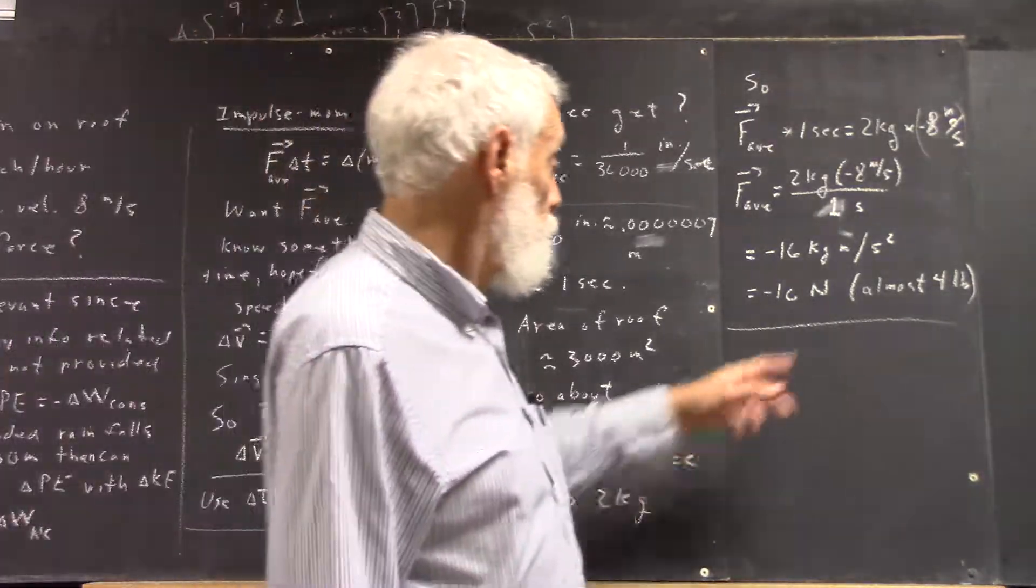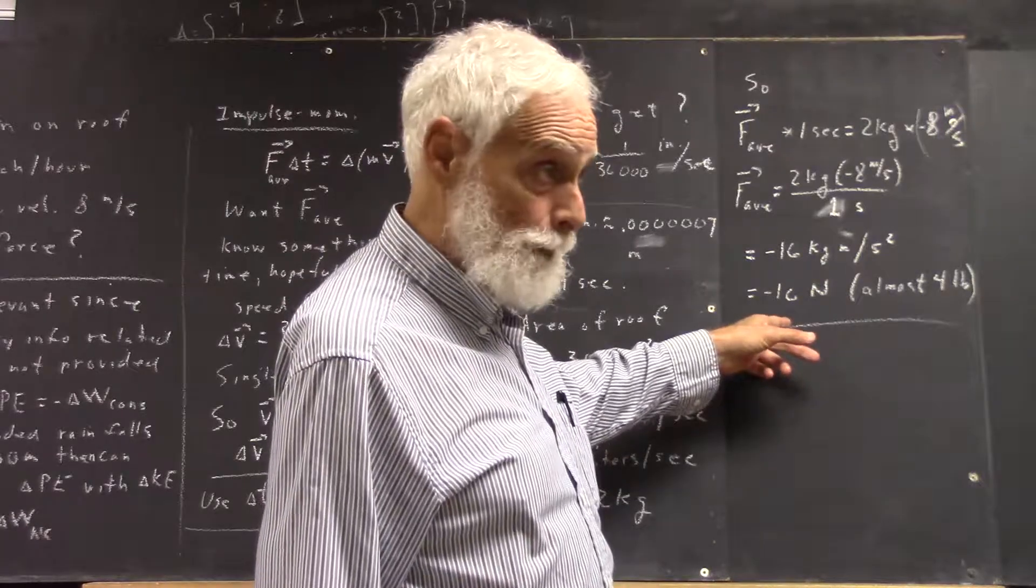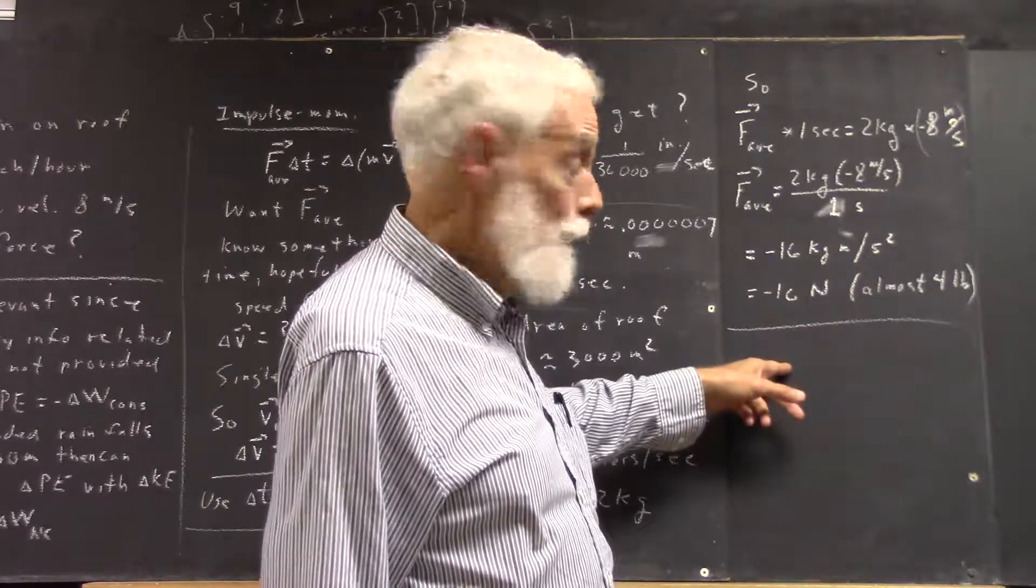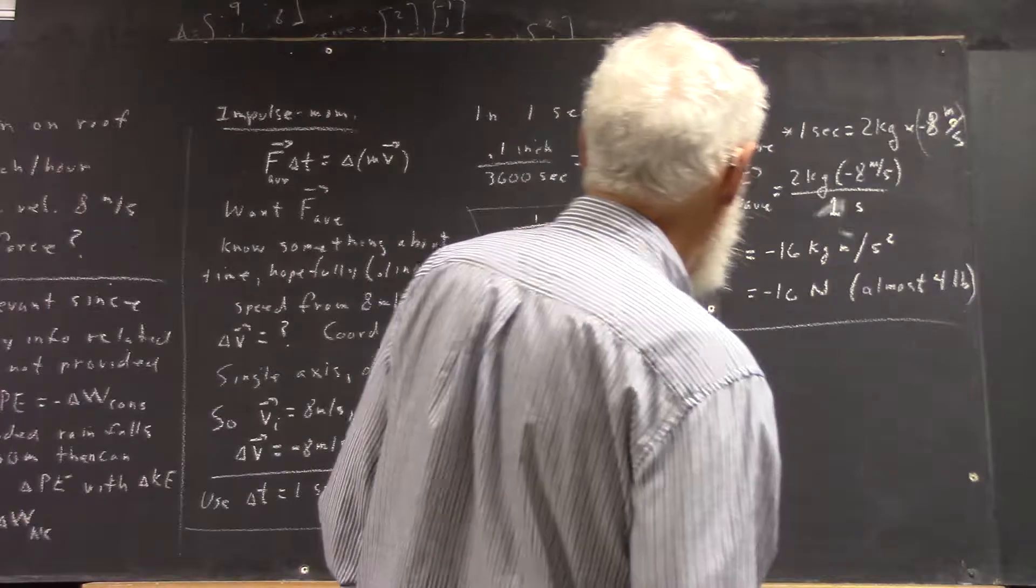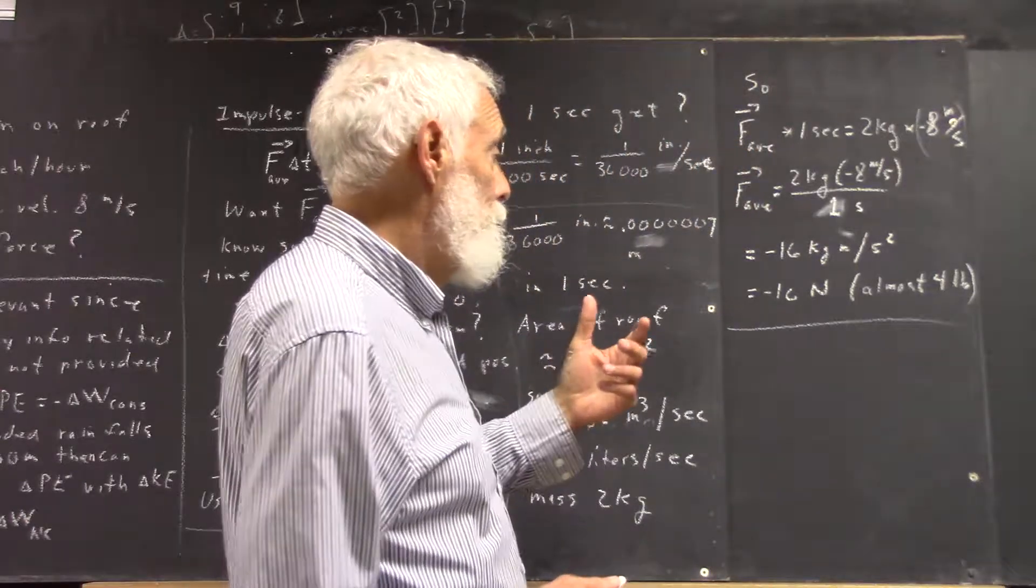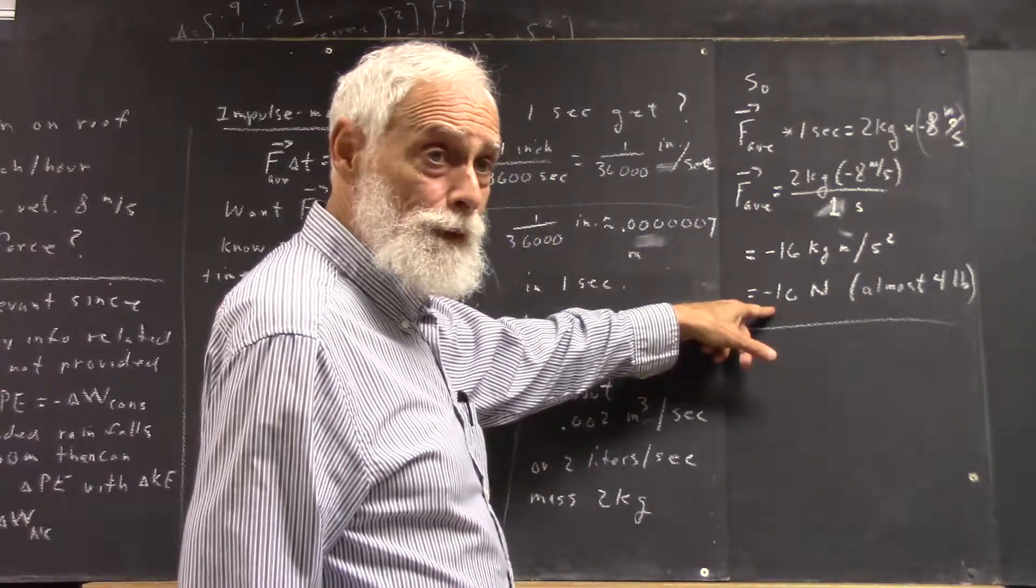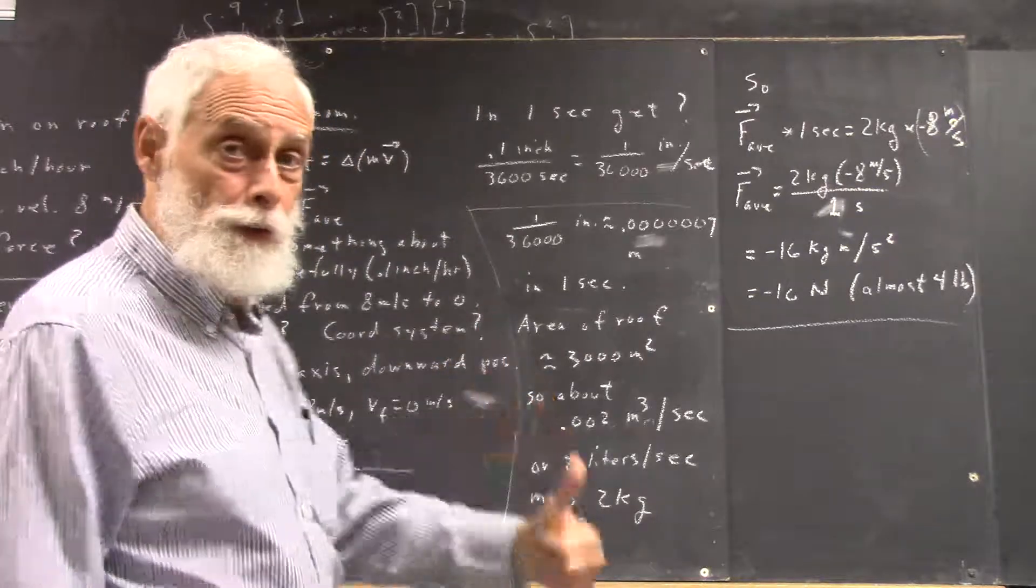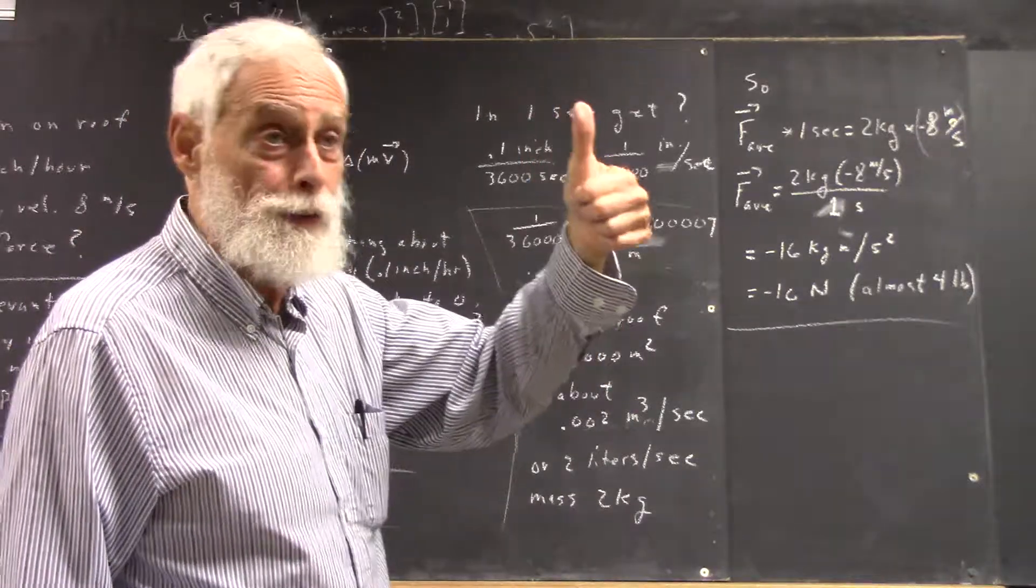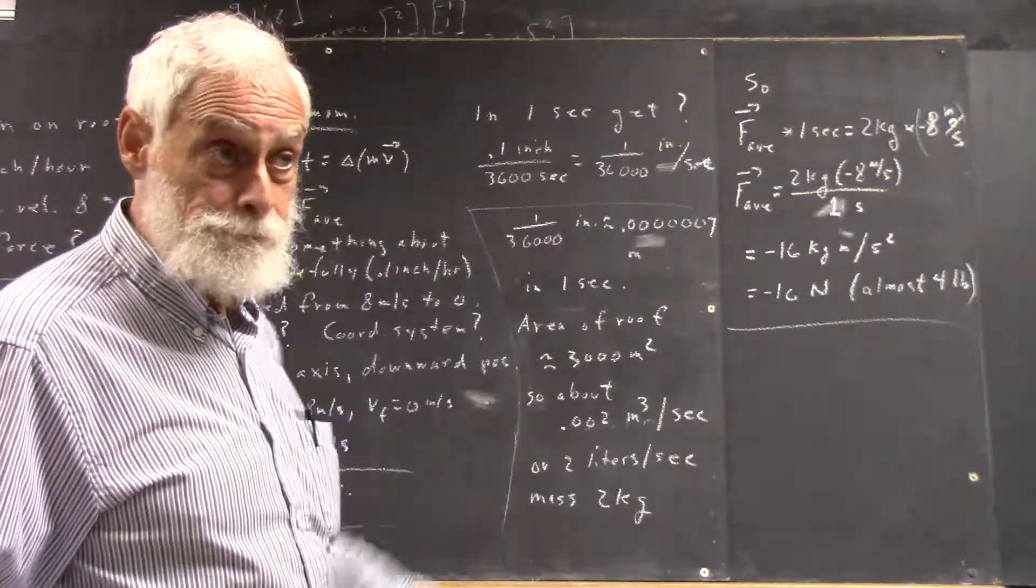Yeah, that's a force exerted by the roof. Why is that negative? Well, because we chose downward as positive, and the roof has to exert a force upward to stop that rain.